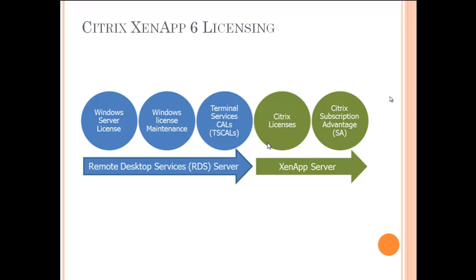Licensing within the XenApp environment is really modularized and broken out. It starts with properly licensing your operating system — your Server 2008 operating system — which is the OS of really any of the servers within your XenApp infrastructure. Depending on your levels of complexity, load balancing, and high availability, this could be a number of servers. Each server running Server 2008 needs to be properly licensed via Microsoft, and you also need proper maintenance and support for that base operating system.